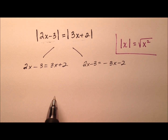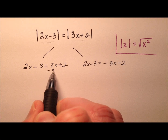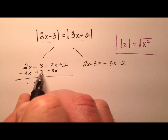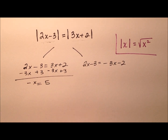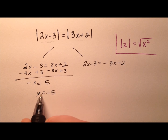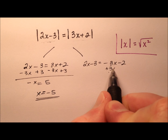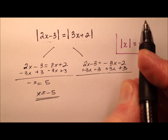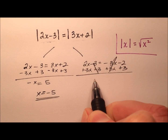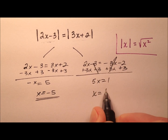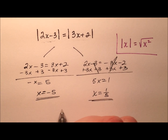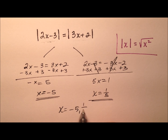So let's go ahead and solve these two equations. I'm going to subtract 3x from both sides, so I have negative x, and then add 3 to both sides. So negative x equals 5, meaning x equals negative 5. That's one of our values. For the second equation, let's add 3x to both sides and then add 3 to both sides — those terms cancel. So 5x equals 1, meaning x equals 1 fifth. So we have two values: negative 5 and 1 fifth.